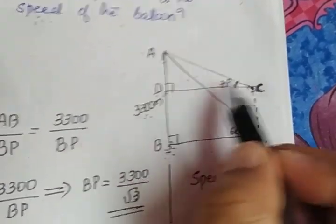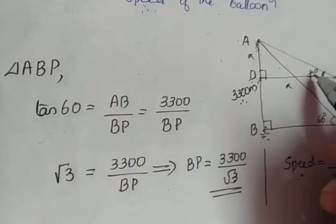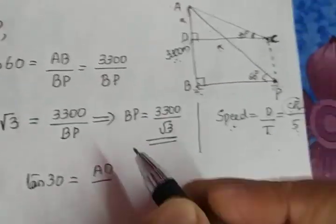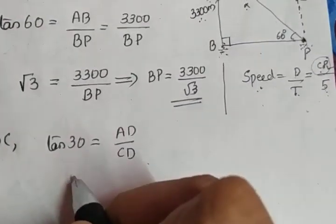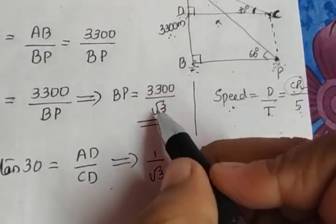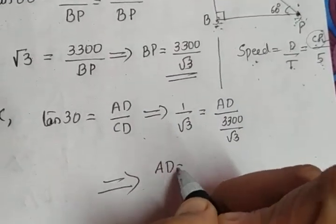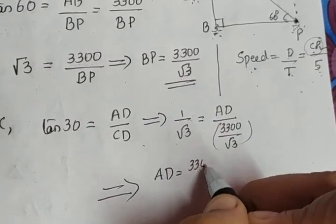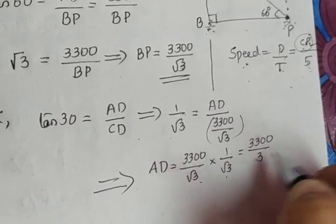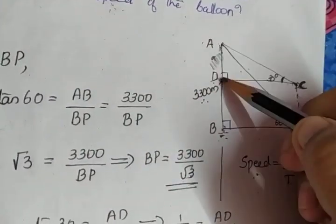Now we take triangle ADC. Tan 30 = AD/CD, where CD equals BP = 3300/√3. Tan 30 is 1/√3. So 1/√3 = AD/(3300/√3), which gives AD = 3300/√3 × 1/√3 = 3300/3 = 1100. So AD = 1100 meters.